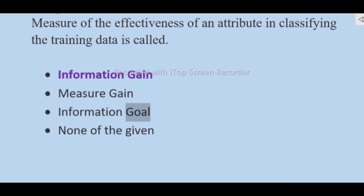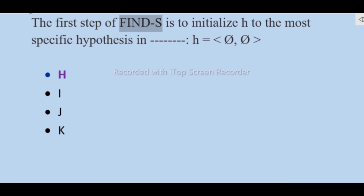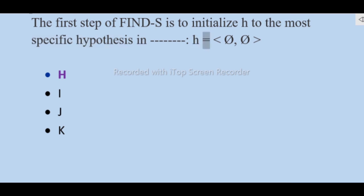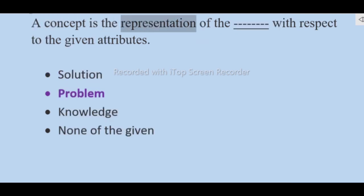The first step of Find-S is to initialize h to the most specific hypothesis in H — h equals the null hypothesis. A concept is the representation of the target with respect to the given attributes.